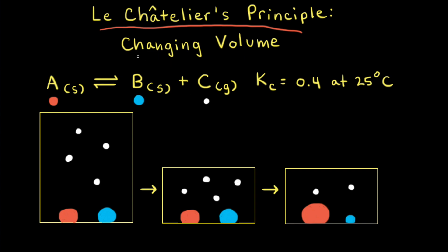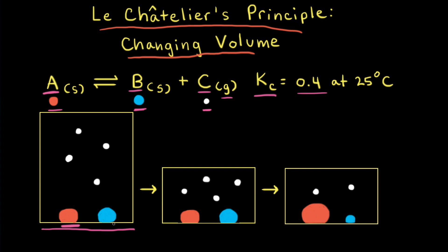One possible stress is to change the volume on a reaction at equilibrium. Consider a hypothetical reaction where solid A, symbolized by red, turns into solid B, symbolized by blue, and also C, which is a gas symbolized by white spheres. The equilibrium constant Kc for this reaction is equal to 0.4 at 25 degrees Celsius. The first particulate diagram shows the reaction at equilibrium, with some solid A and solid B at the bottom of the container and some gaseous particles of C.